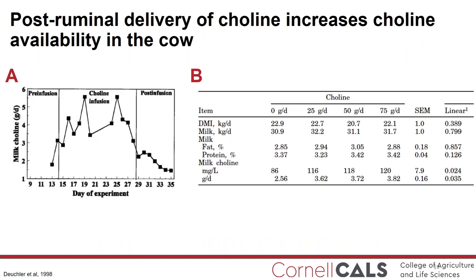Research then aimed to investigate the effects of post-ruminal choline delivery. Early trials focused on the abomasal infusion of choline. In Panel A, 60 grams per day of choline was infused into the abomasum for two weeks in Holstein cows, and you can see increases in milk choline. In a separate experiment involving four cows, abomasal infusion of 25 to 75 grams per day increased milk choline concentrations. These early studies did not observe any effects on milk yield, most certainly because of small study populations.